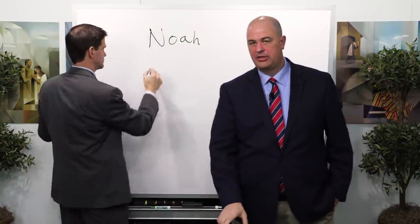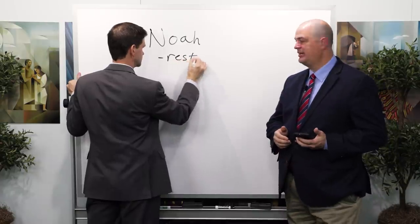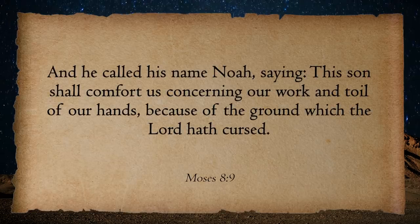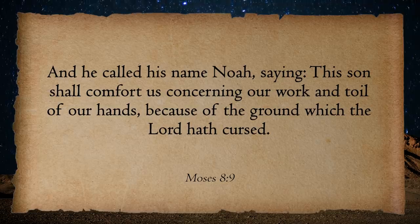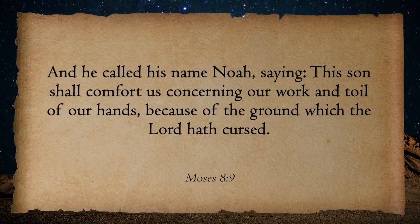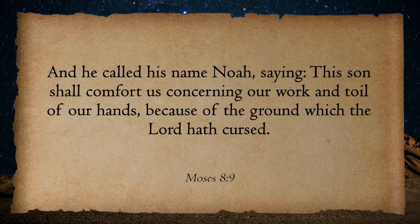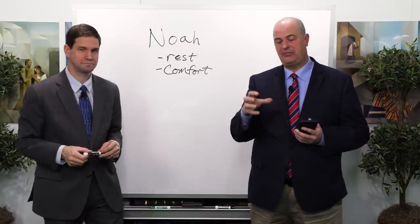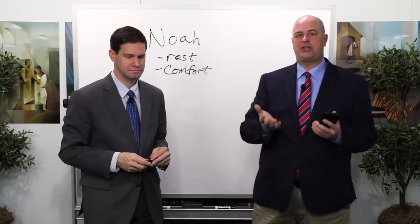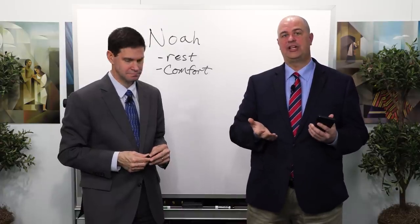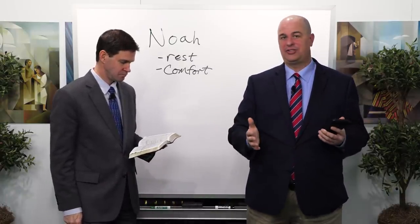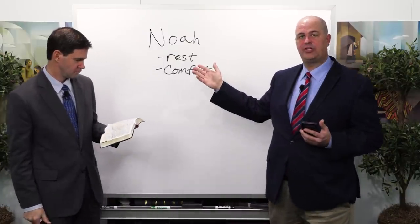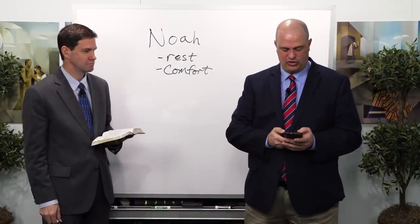If you could write down these words: rest and comfort. In Moses chapter 8 verse 9, when Noah is born he's called Noah. Why? 'This son shall comfort us concerning our work and toil of our hands because of the earth which the Lord hath cursed.' There's something inherent in the name Noah — his name literally means rest or comfort — that comfort comes from listening to God's chosen servants and being prepared against the floods of life that will inevitably happen to everybody. Where does comfort come from? It comes from Jesus.